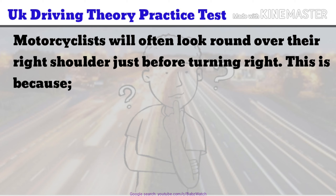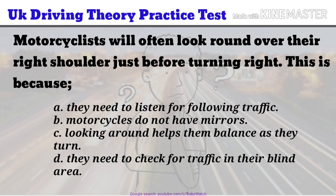UK Driving Theory Practice Test Question 15 of 50. Motorcyclists will often look round over their right shoulder just before turning right. This is because: a. They need to listen for following traffic. b. Motorcycles do not have mirrors. c. Looking around helps them balance as they turn. d. They need to check for traffic in their blind area. The correct answer is d.